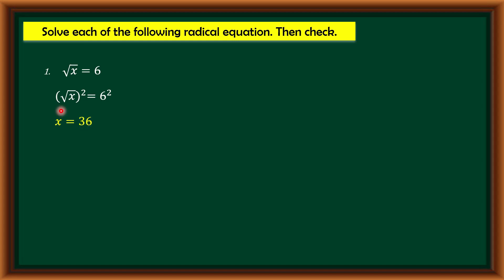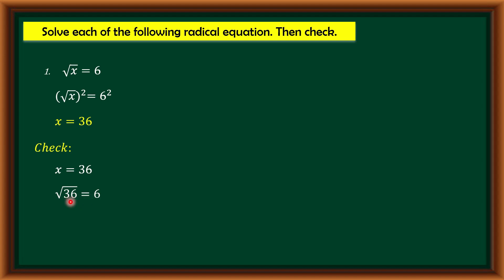The solution for square root of x equals 6 is x = 36. Let us check: substituting x = 36 into the original equation gives square root of 36 is equal to 6, and square root of 36 is indeed 6. Since 6 equals 6, x = 36 satisfies the equation. The solution set is {36}.